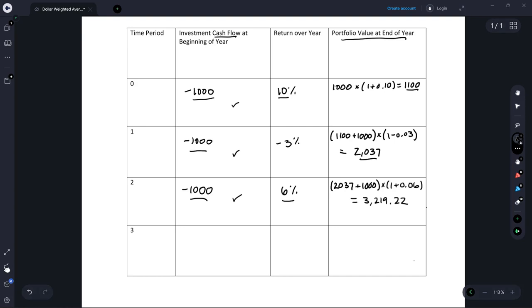And then we can pretend that we close out our portfolio or we sell our portfolio and then have a cash inflow into our pocket. And that cash inflow would be the value of our portfolio of $3,219.22. Notice that that cash flow is a positive cash flow. So cash flow out, cash flow out, cash flow out, cash flow in.